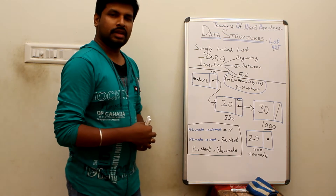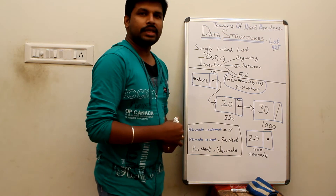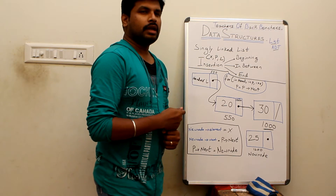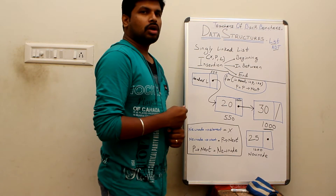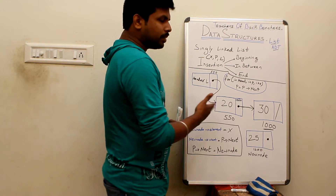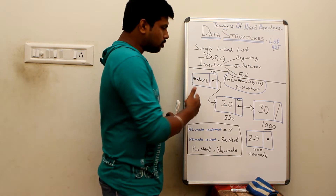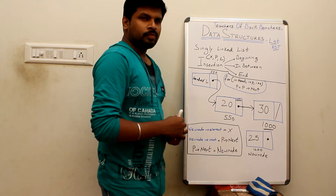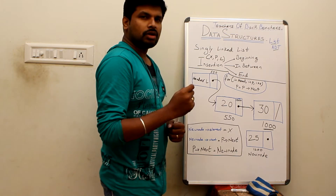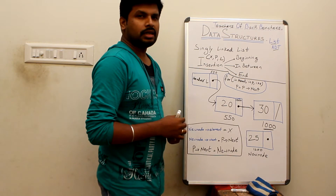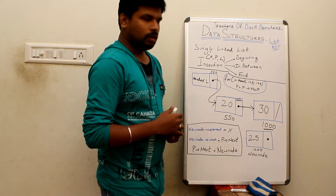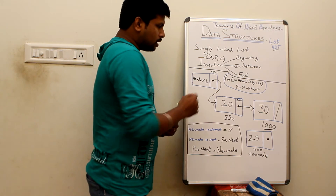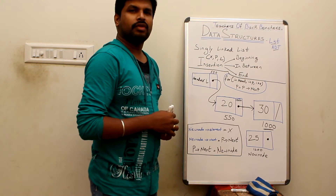Suppose this is the given list for us. The list consists of two values: 20 and 30, so we have two members inside the list. To identify the beginning and the end of the list we use head and null. Head is a label which indicates the starting of the list, and null indicates that it is the end of the list.